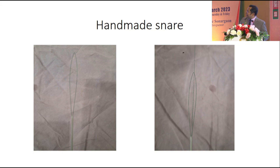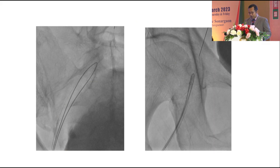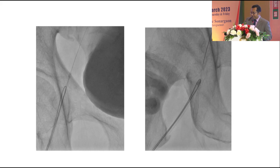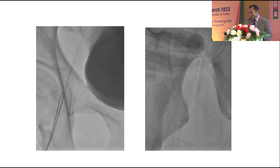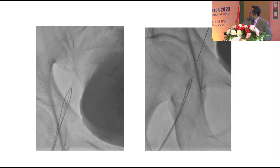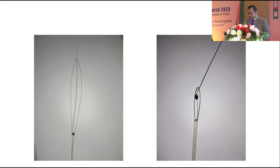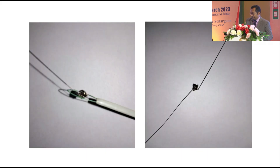Next, we made a handmade snare. The plan was to make a U-loop and, with the help of another wire, form a three-dimensional diamond-shaped snare. We introduced the handmade snare, and on the first attempt we failed to trap the stent, but on the second attempt we succeeded and very carefully and gradually pulled it toward the sheath. This is our handmade diamond snare, and this is the distorted, fragmented, and smashed stent. This is the final picture after excluding the stent with wire.